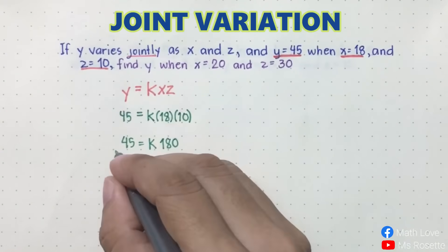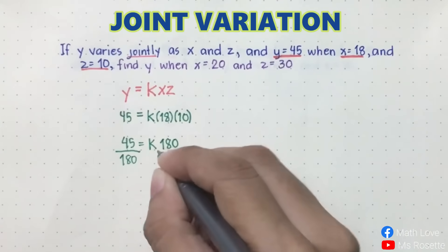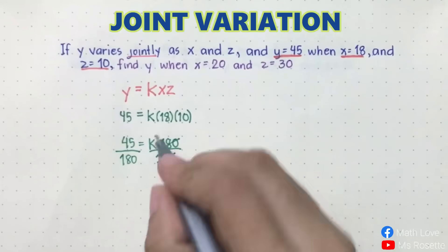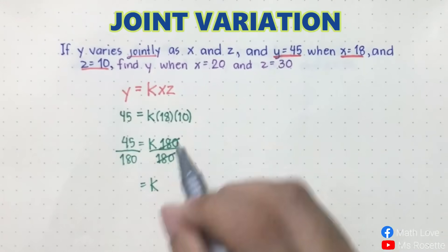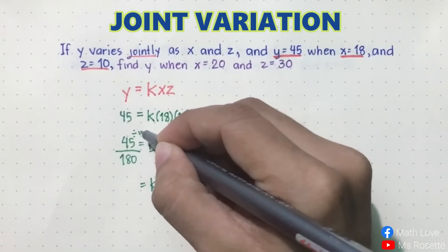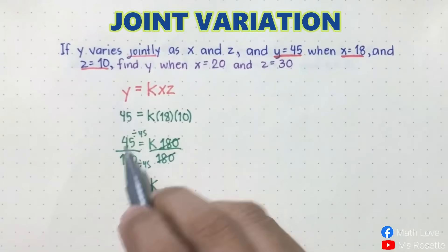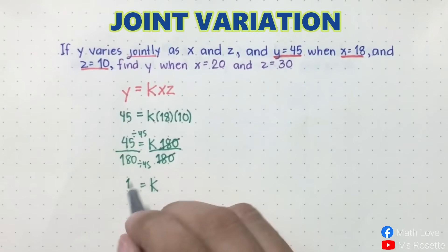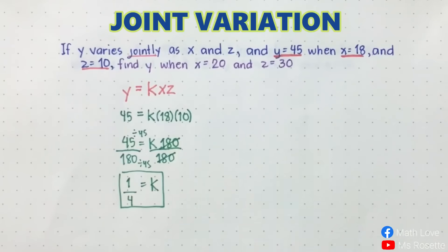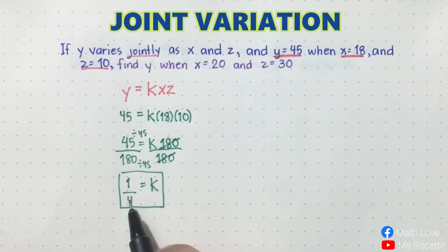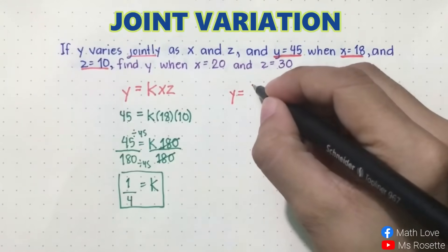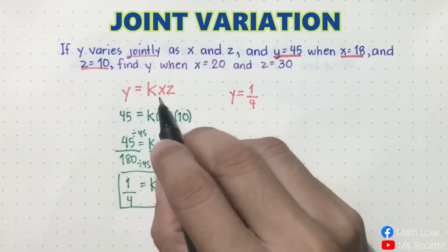Solve for k by dividing both sides by 180. Cancel 180, so we only have k on this side. Simplify 45 over 180 by dividing both numerator and denominator by 45. 45 divided by 45 is 1, and 180 divided by 45 is 4. So the constant of variation is 1 fourth. Now rewrite the equation with k as 1 fourth: y is equal to 1 fourth times xz.